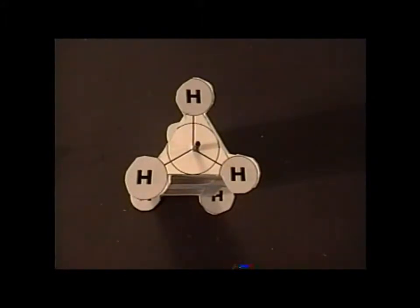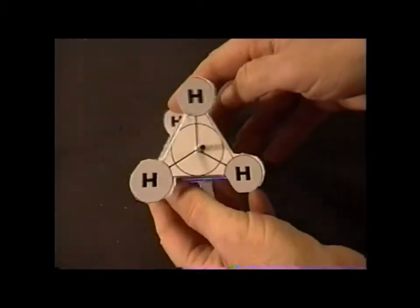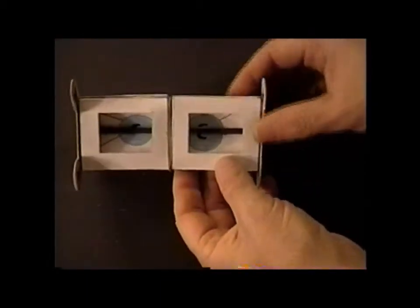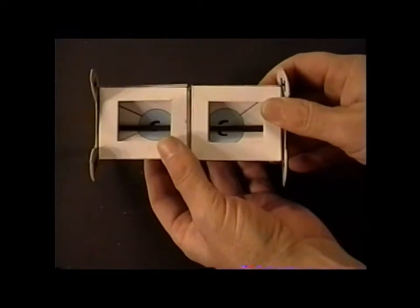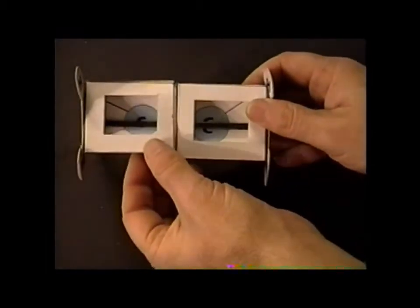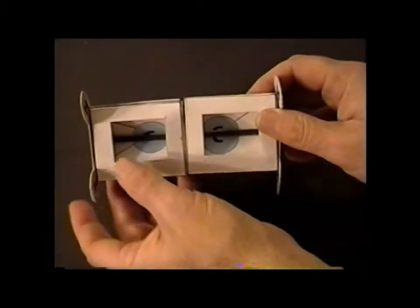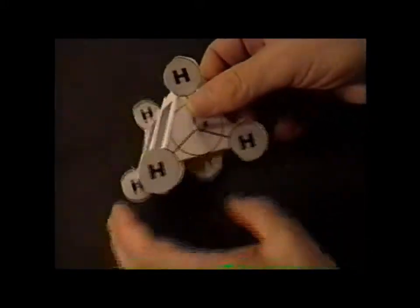It turns out that one thing you can do is to break up the ethane molecule into two pieces. We've broken it up into two different parts, and each part is independent of the other. Each of these pieces, these triangular prism sections, is equivalent to a methyl group.